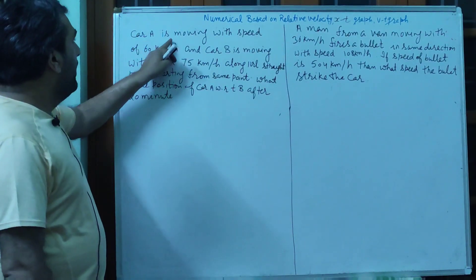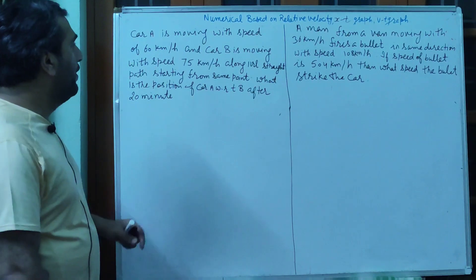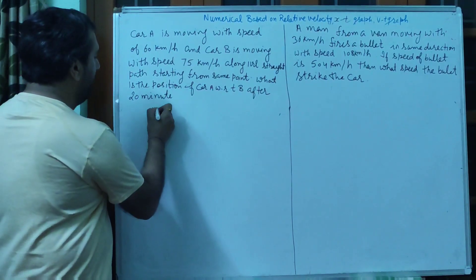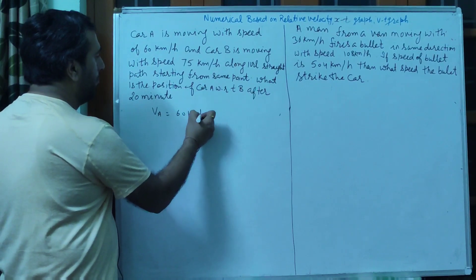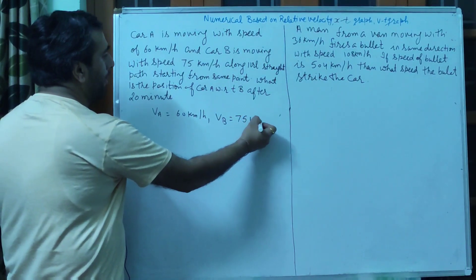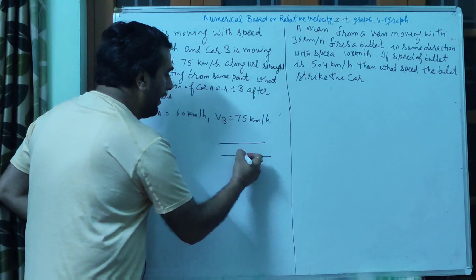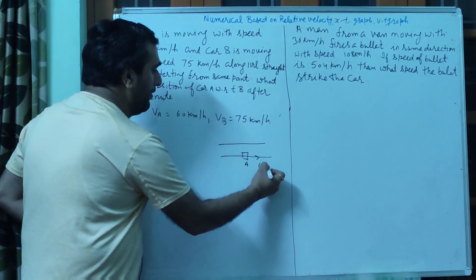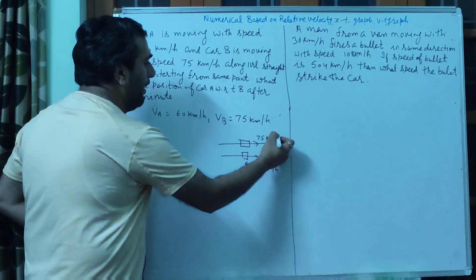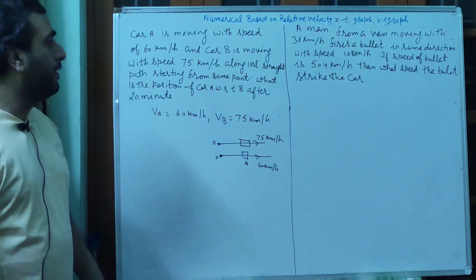Next question: Car A is moving with speed of 60 km per hour and car B is moving with speed of 75 km per hour। VA = 60 km/h, VB = 75 km/h। दोनों cars straight track पर move कर रही हैं, starting from the same point।